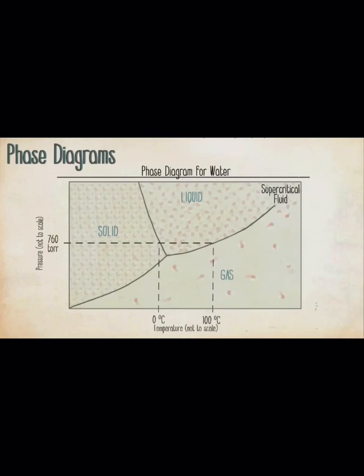Here is the phase diagram for water. Let's look at several of its features. The three major regions, solid, liquid, and gas, represent conditions in which that particular state is stable. For example, at 760 torr and negative 10 degrees Celsius, the solid state is the stable state for water. But at 760 torr and 110 degrees Celsius, the gas state is the stable state.